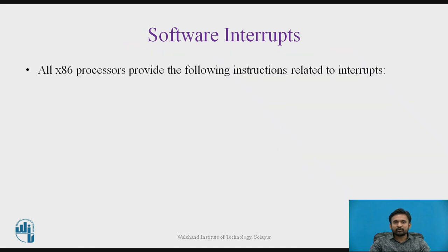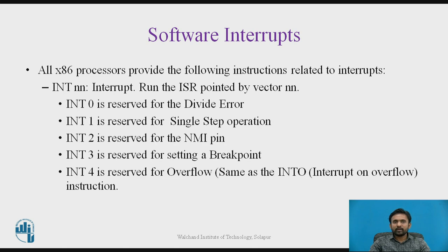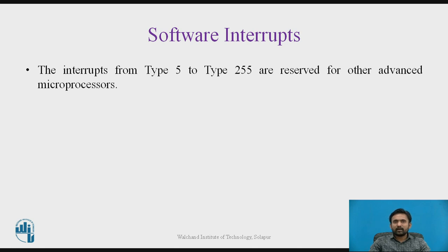All 8086 processors provide the following instructions related to interrupts. The interrupt instruction INT n runs the ISR pointed by the vector number. Some reserved interrupts include: INT 0 — reserved for divide error; INT 1 — reserved for single step operation; INT 2 — reserved for the NMI pin; INT 3 — reserved for setting a breakpoint; INT 4 — reserved for overflow. Interrupts from INT 5 to 255 are reserved for advanced kinds of microprocessors.